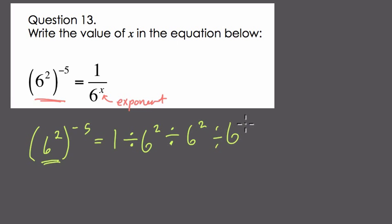We divide over and over again. Okay, you've got 5 6 squares. Now, instead of dividing by 6 squared, the equivalent is multiplying by 1 over 6 squared.